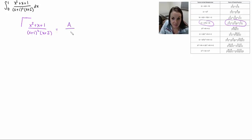And I'm trying to find my a, b, and c here. So I have a over x plus 1 is my first fraction. I have b over x plus 1 squared is my second fraction. And then c over x plus 2 as my third fraction.